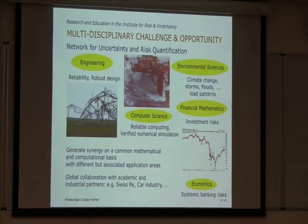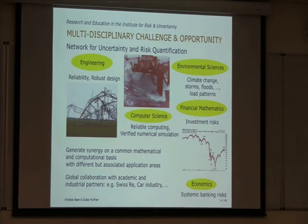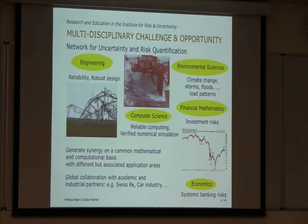We have to translate this kind of risk into the understanding of society. What happens when there is an electricity breakdown? If it happens more frequently, it may affect the stock market — so we see effects connected to investment risks and banking risks, which are interconnected with the failure of structures. We have to think about how we can make our structures safer to avoid these adverse effects, considering climate change, storms, floods, and changing load patterns — environmental sciences come in.